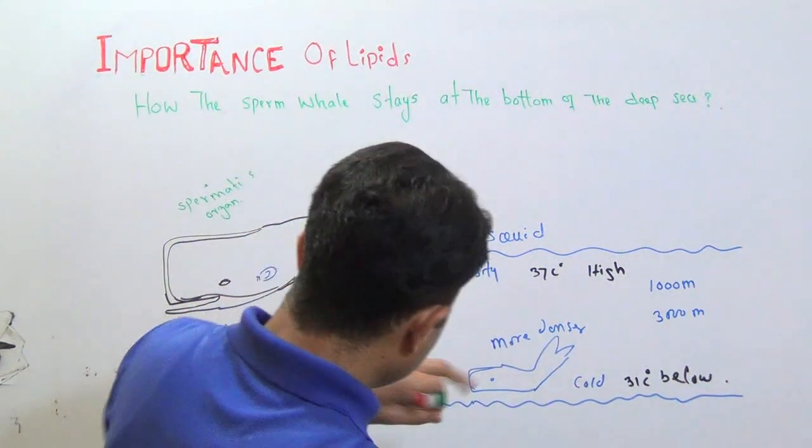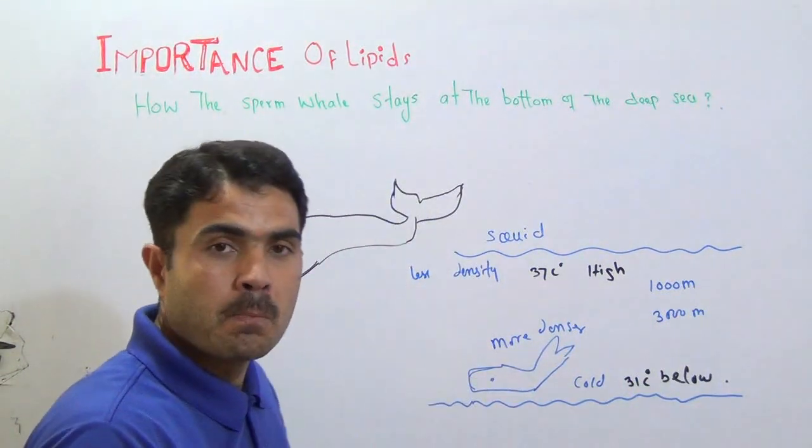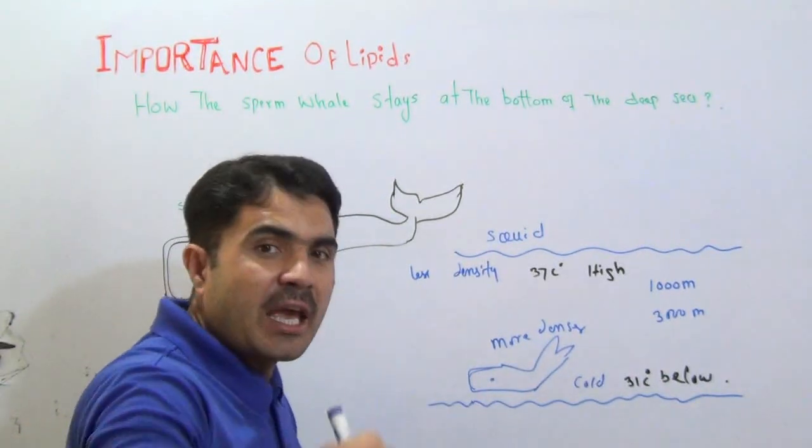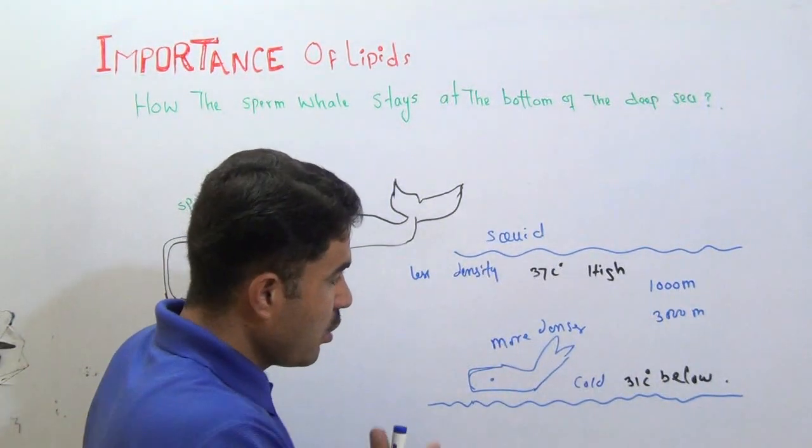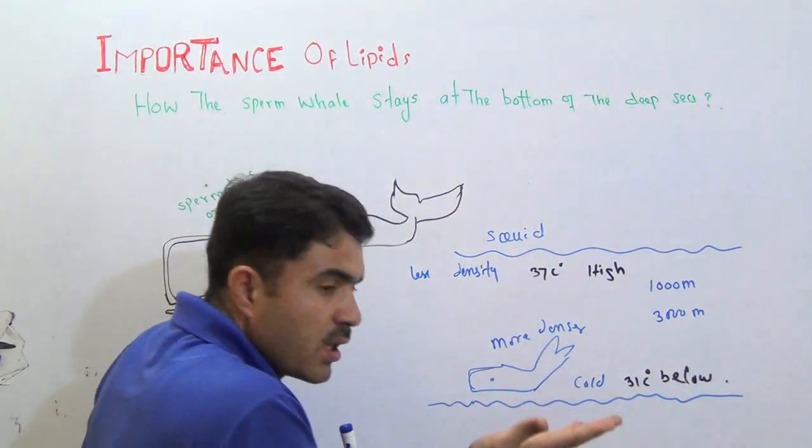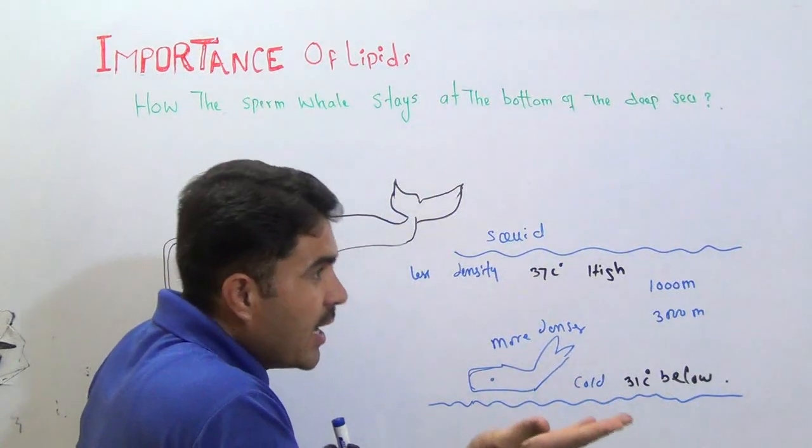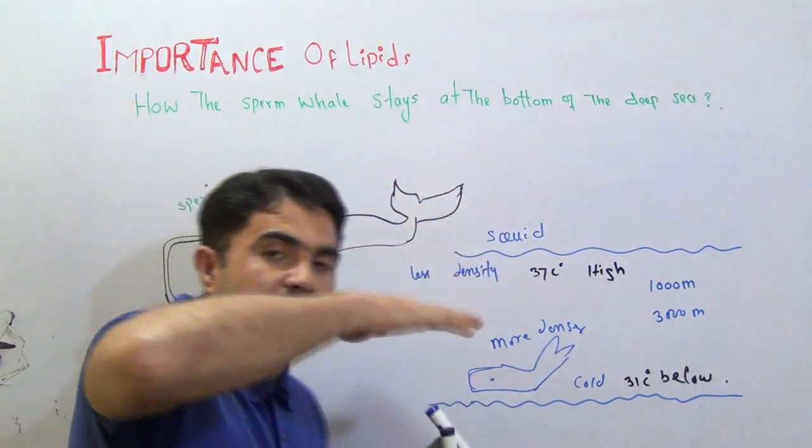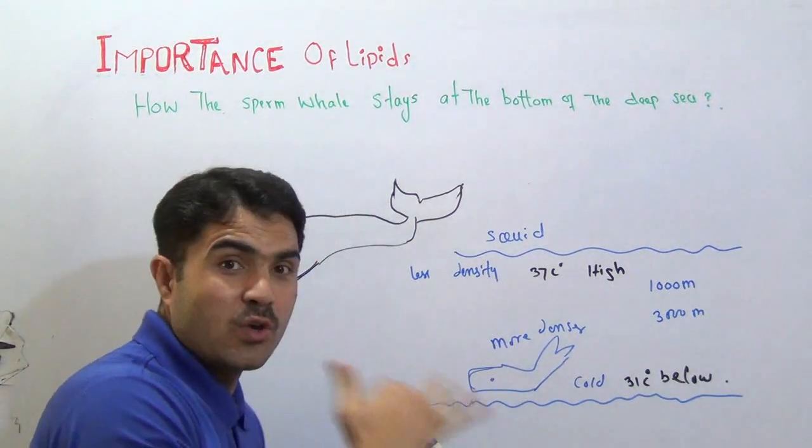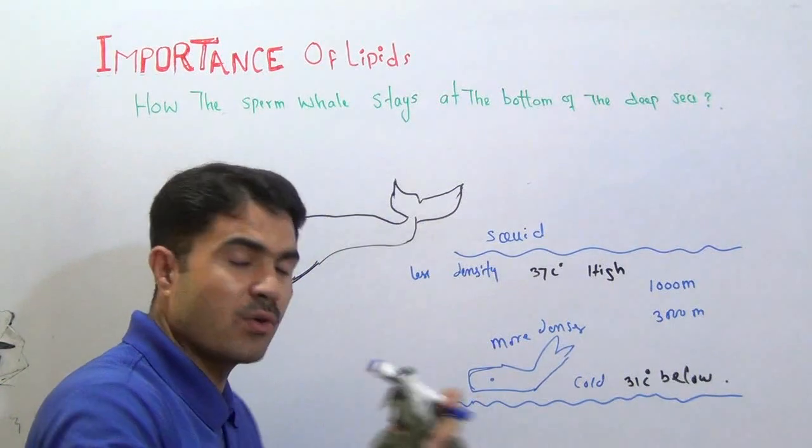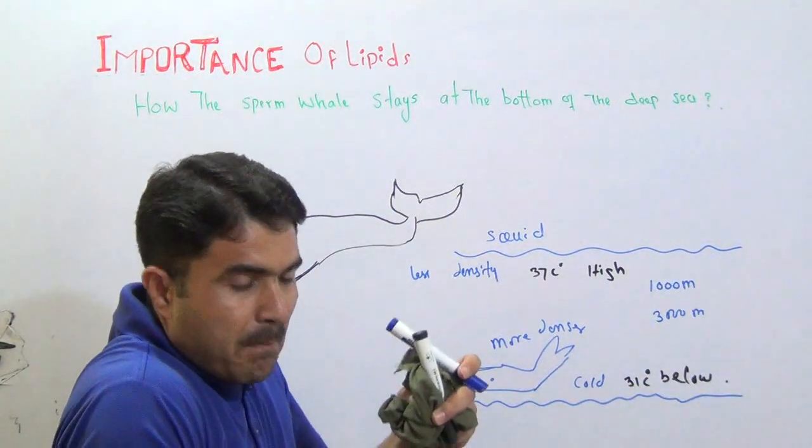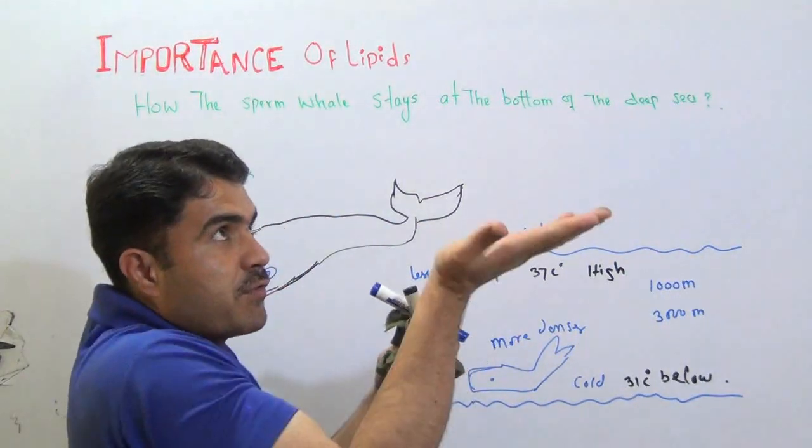If the whale is not attempting, is not making an effort of swimming, then because of the difference of the density at the bottom, the water will carry the whale and move it to the surface back. Just like a balloon, just like a balloon, because of its buoyancy issues, because of its buoyancy problem. It cannot stay. The water will compel, will propel it and it will move up.